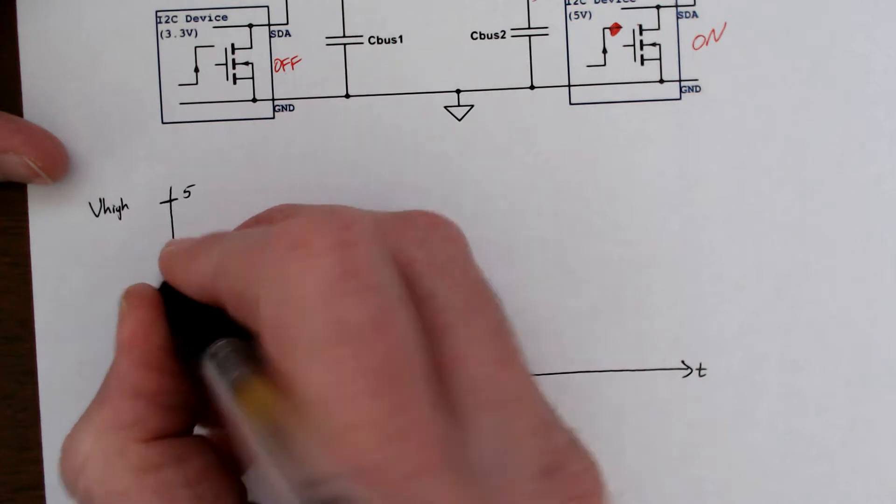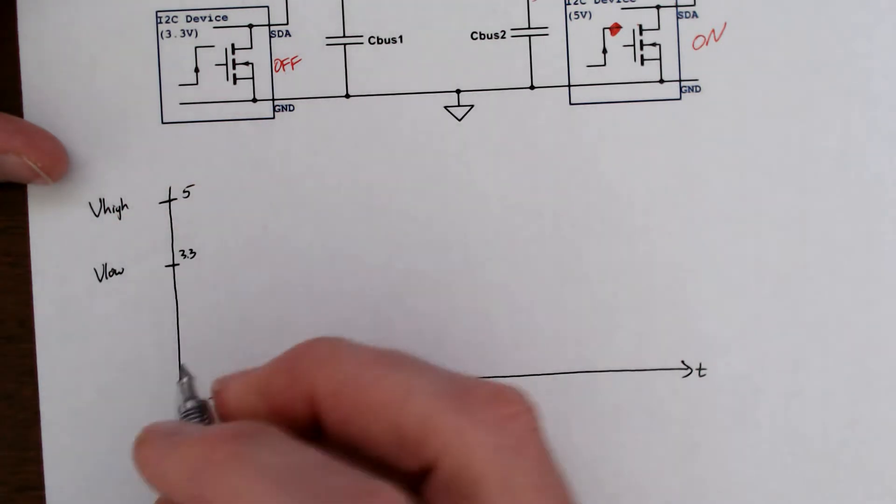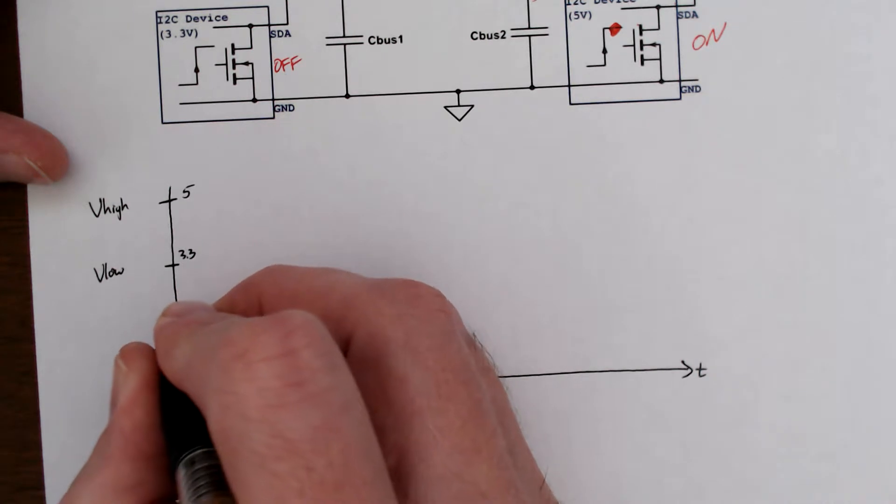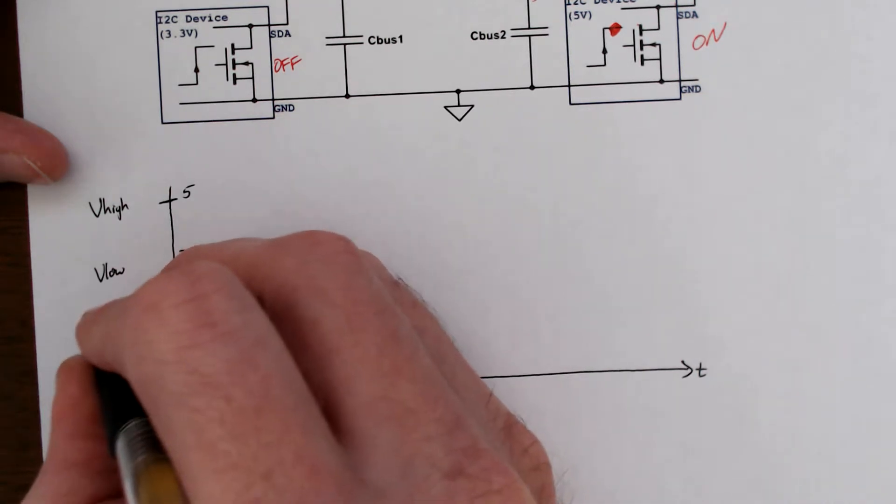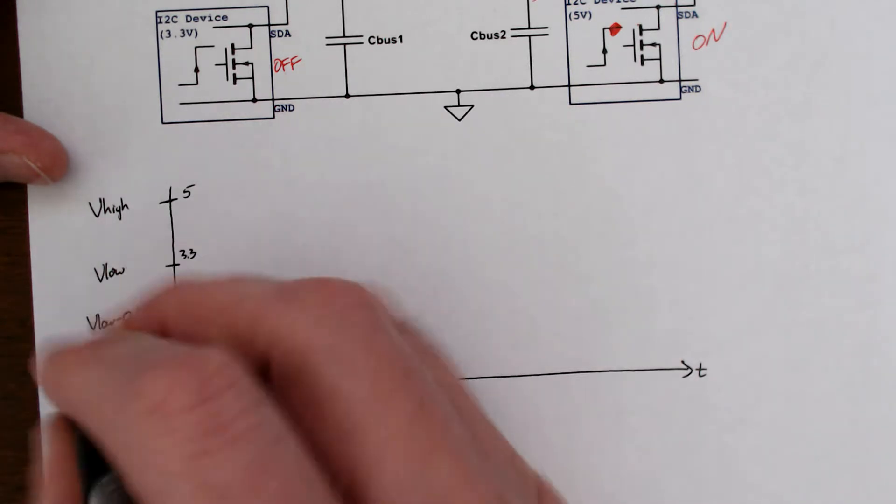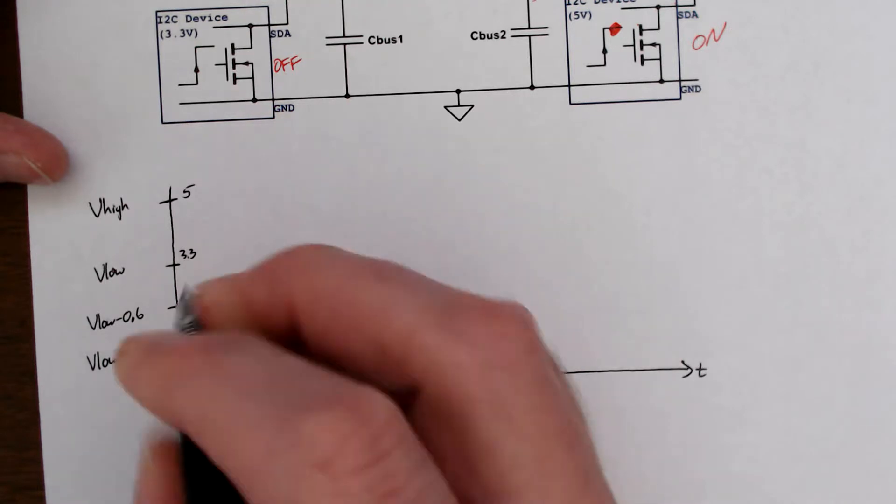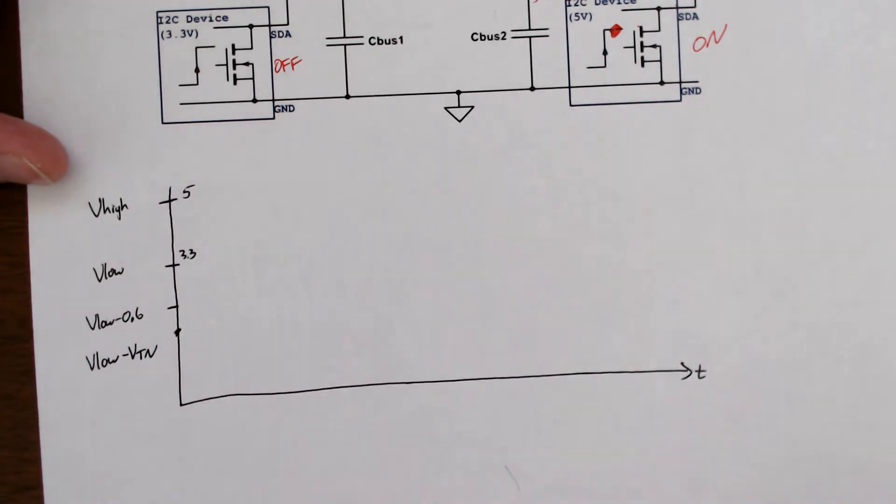Here's V high, which is 5. Here's V low, which is 3.3. Here is V low minus 0.6. We'll see that in a second. And V low minus the threshold is the final point on our curve.